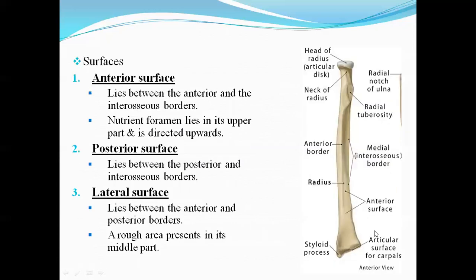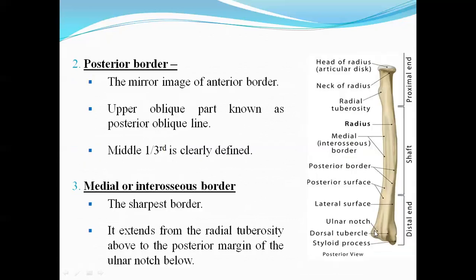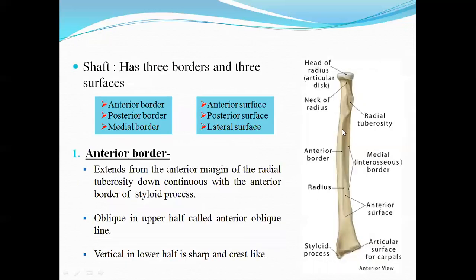The medial border features the ulnar notch posteriorly. Inferiorly, the ulnar notch is related to the head of the ulna at the posterior margin. The third border is the posterior border, which is the interosseous border.